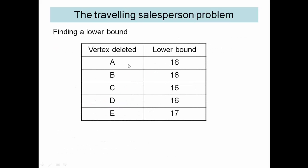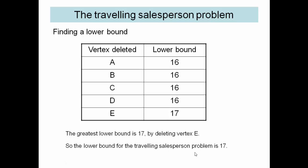We can see there that deleting different vertices gives us these lower bounds. The best of these is actually the highest, so we take that as our lower bound. The reason that's the best is we know we can't beat any of these. We can't do better than 16 or 17. So the 17 gives us the best information. It tells us that 17 can't be beaten.